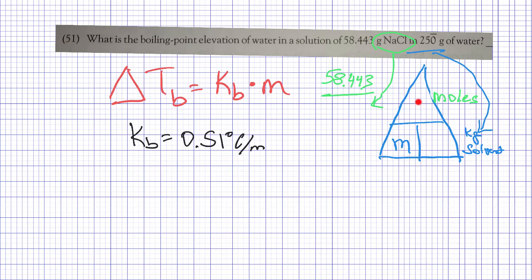Once you know the moles and we know the kilograms of solvent is 0.25, then you can divide and you'll have the molality. Then it's just a matter of plugging into our formula because we're solving for the boiling point elevation. You can plug in the KB, plug in the molality that we just solved for, and you'll have that answer. I'll let you finish that one on your own.